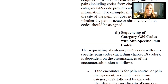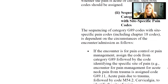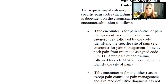Sequencing of category G89 codes with site-specific pain codes, including those in chapter 18, is dependent on the circumstances of the encounter. If the encounter is for pain control or pain management, assign the code from category G89 first, followed by the code identifying the specific site of the pain. For example, an encounter for pain management for acute neck pain from trauma is assigned code G89.11, which is acute pain due to trauma, followed by code M54.2 to identify the site of the pain.